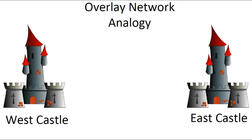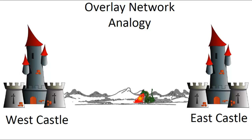Let's start with a quick analogy for an overlay network. This analogy may seem a little funny, but it is very brief and a useful starting point. Imagine there are two castles — one in the west and one in the east. These castles are separated from each other by some land that can't be crossed by foot. The king in the west castle needs to send an urgent message to the king of the east castle. How can he do this?